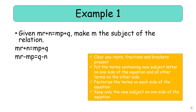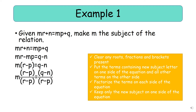We move mp to the left side of the equation, giving us mr minus mp. Next we factorize m out to get m(r − p) = q − n. We then divide both sides by (r − p) to get rid of the (r − p) multiplying m, leaving us with m = (q − n) / (r − p).